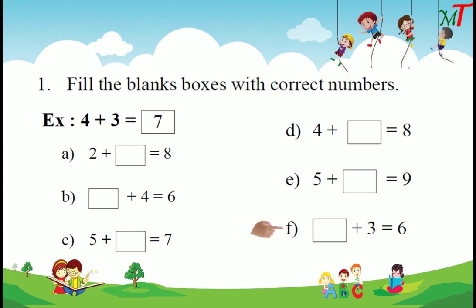Next: dash plus 3 equals 6. Here, 3 is the given number, so 3 dots. Next, we add up to 6: 4, 5, 6. How many dots did we add? Only 3. So 3 plus 3 equals 6. Like this, you do Activity 1 in your worksheet 22.